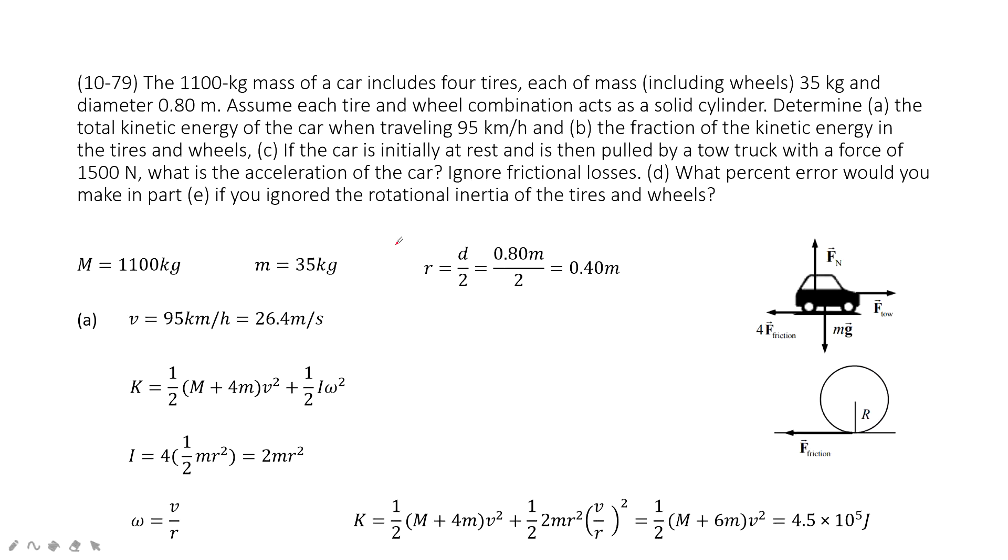In this chapter we talk about rotational motion. In this system we have a car with four tires. The car's mass is given, the tire's mass is given, and the diameter of the tire is given so you can get the radius, just d over 2, 0.4 meter. This is all the quantities given.